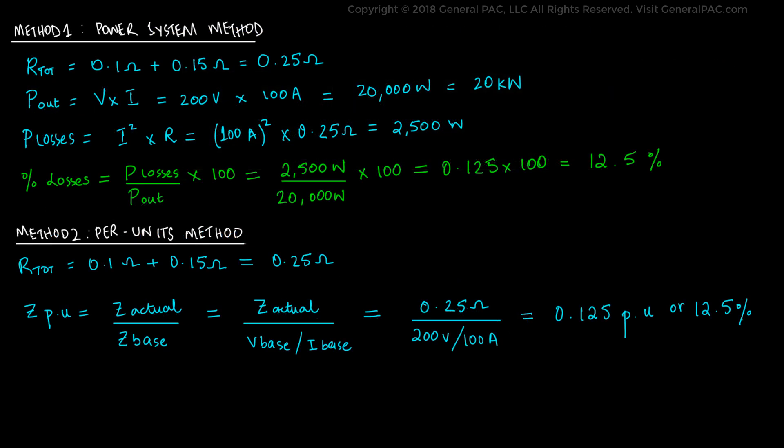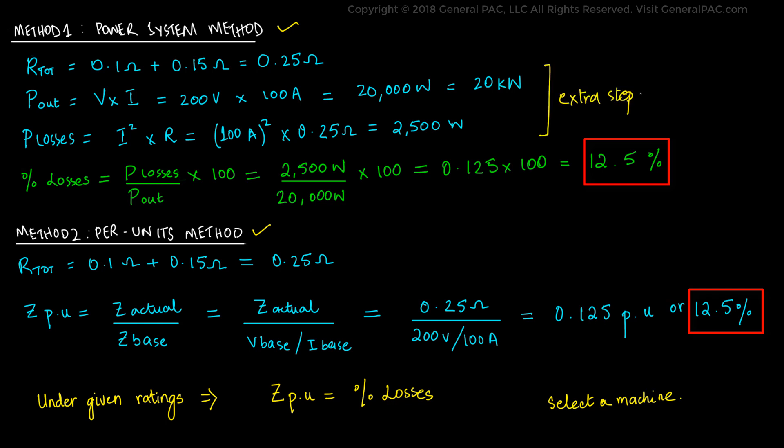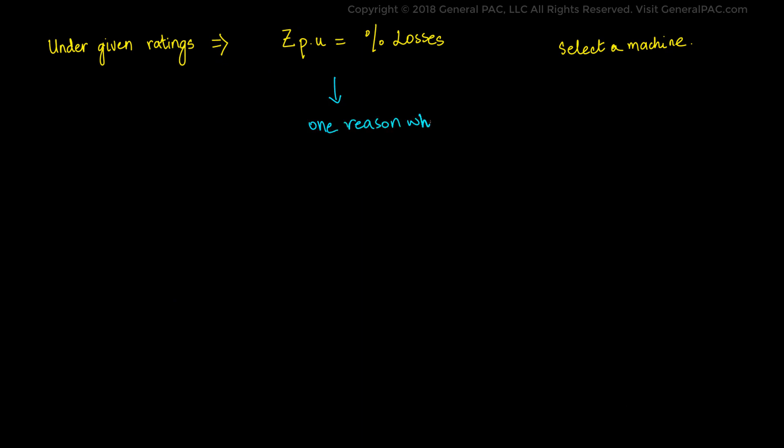If we compare the two values between method one and method two, we will find that they are exactly the same value. This means that under the given ratings, the per unit impedance is equal to the percent losses in terms of impedances. Thus, if we employ either of the methods in comparing more than one machine, we can determine which machine is more efficient. The difference is that by using per unit calculations, we don't have to perform these extra steps as we did in the first method. This is one of the reasons why per unit calculations is much more desirable in power systems, because they eliminate some of the extra calculation and make the problems more simple.